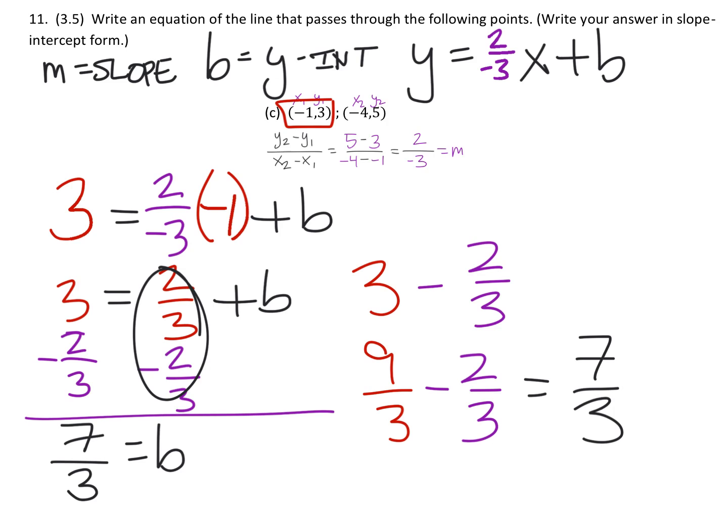Let's replace that in our equation: y equals 2 over negative 3 x plus 7/3. This is slope-intercept form and that's it. Thanks again for watching, hopefully this has been helpful for you.